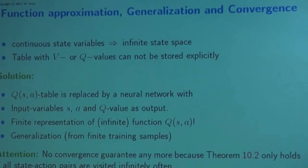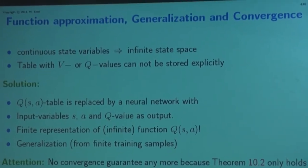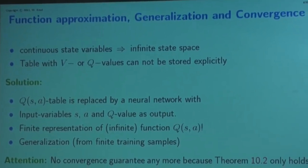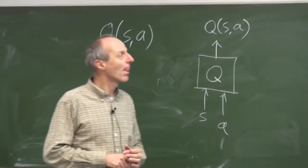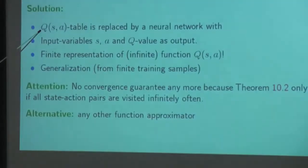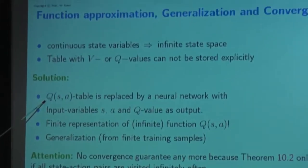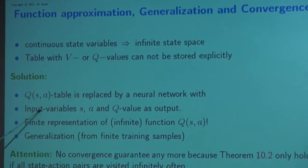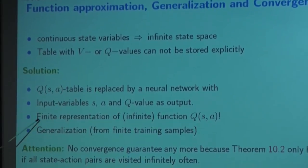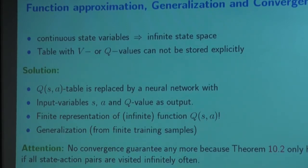The same thing can be done for value iteration, where we have a value function depending only on the state. The Q table is replaced by a neural network with input variables S and A and Q value as output. We have a finite representation of an infinite function. If this is a neural network, the representation is the weights — maybe 100 weights, which is finite.